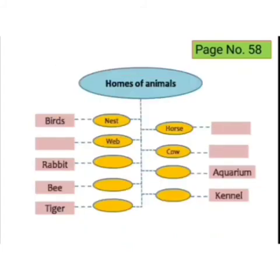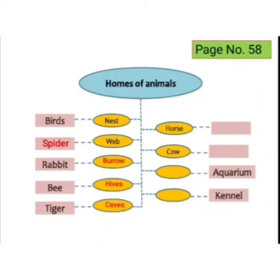Homes of animals: Birds — nest. Spider — web. Rabbit — burrow. Bee — hive. Tiger — cave. Horse — stable. Cow — shed. Fish — aquarium. Dog — kennel.